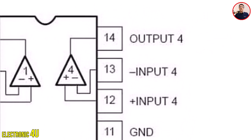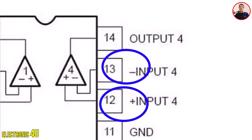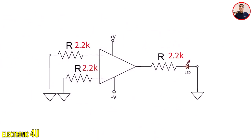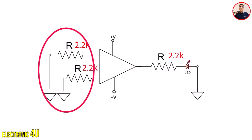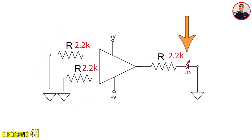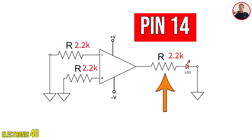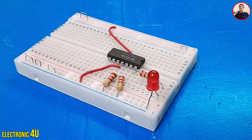Remember a very important point: the positive and negative signs on the inputs don't mean you necessarily have to use positive and negative voltages. These signs only show how the inputs affect the output signal, which we will practically examine. The op-amp input should never be left floating because it may pick up noise and cause interference. For this reason, we connect the inputs to ground using 2.2 kilo-ohm resistors. To indicate when the op-amp output is active, we place an LED with a 2.2 kilo-ohm resistor on pin number 14.